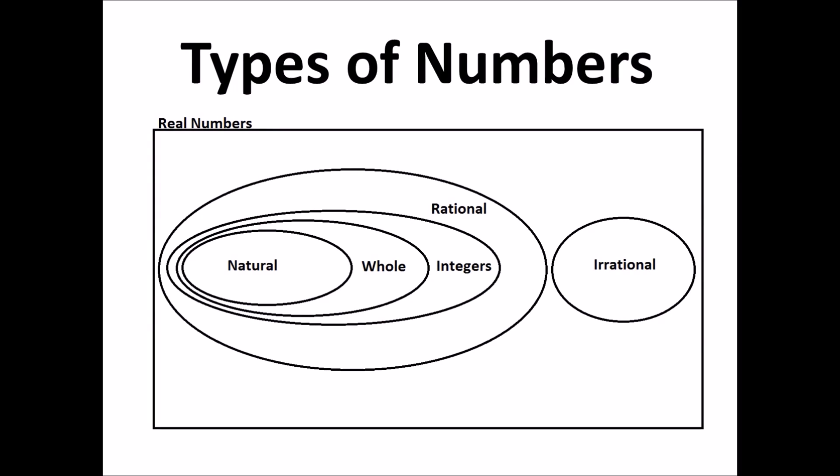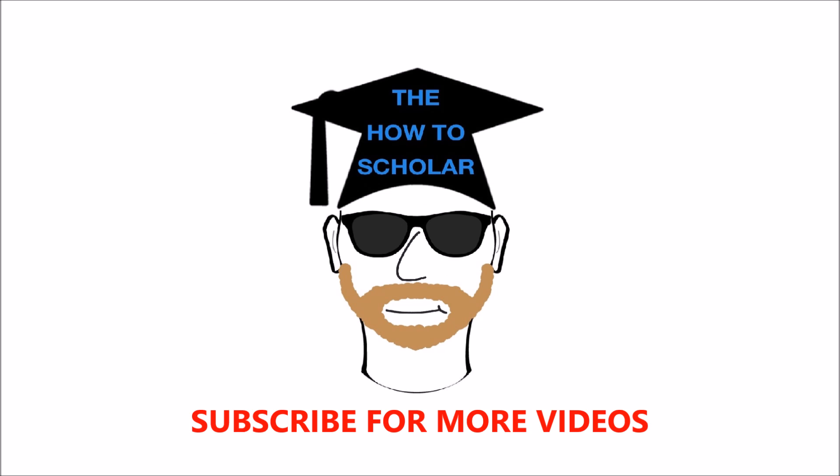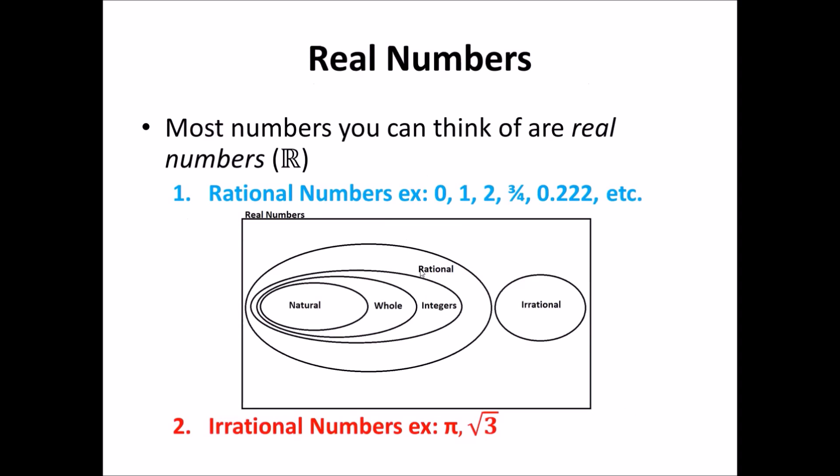This video will teach you about the types of numbers you'll see in math. Most of the numbers that you can think of are real numbers. They're represented by the symbol of capital R and they're split up into two divisions, either a rational number or an irrational number.